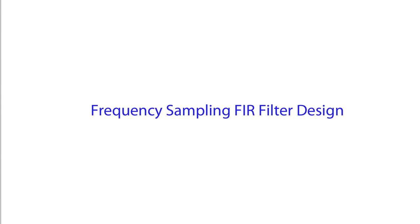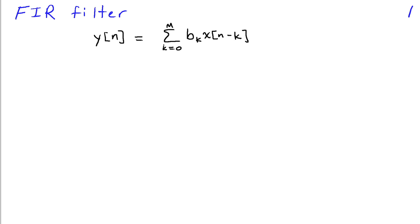Frequency sampling is one common method that can be used to design finite impulse response filters. Recall that a finite impulse response filter has a difference equation where the output at time n is given by a weighted combination of past values of the input.